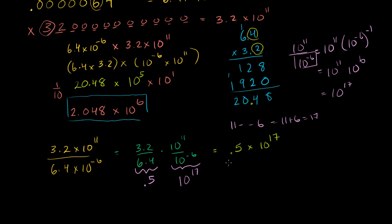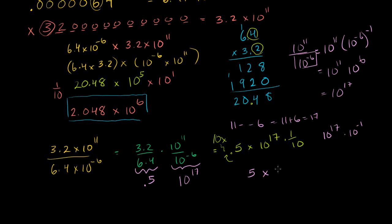But if you want to be a stickler and put it into scientific notation, we want something greater than or equal to 1 in front. So we multiply this side by 10 and divide that side by 10 — we're not changing the number. So 0.5 times 10 becomes 5, and 10 to the 17th divided by 10 is 10 to the 17th times 10 to the minus 1, which equals 10 to the 16th power. So the final answer is 5 times 10 to the 16th.